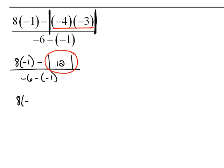So again, I'm recopying everything else that I'm not using. 8 times negative 1 minus the absolute value of 12 is the distance from 0 to 12, which would be 12 units. And then I'm recopying also this denominator.